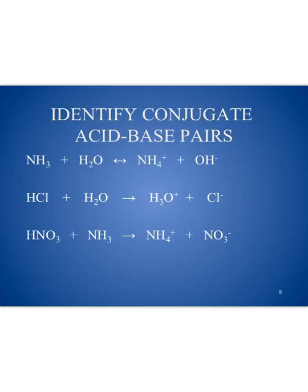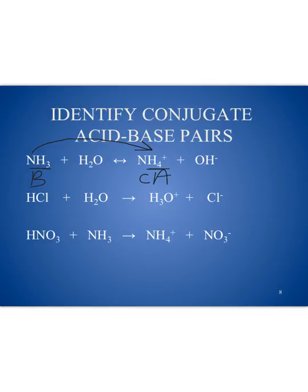Let's see if we can identify some conjugate acid-base pairs. Let's pick a reactant and see if we can figure out what it turns into as a product. For example, we've got ammonia (NH3). It most likely is going to turn into NH4+. You can see that we've gone from three hydrogens to four hydrogens, so this means that ammonia has accepted a hydrogen ion. That makes it the base — I'm going to use B for base.